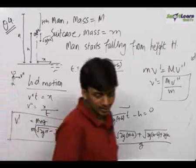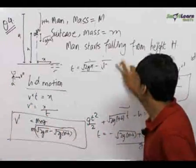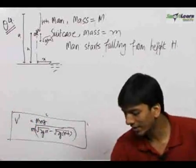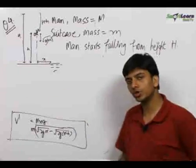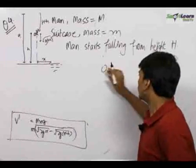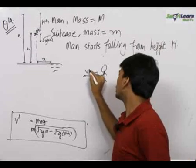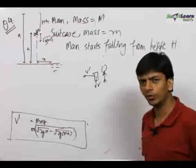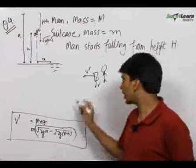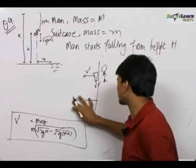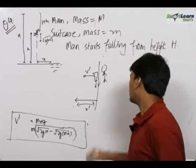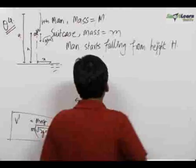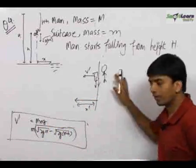The second part of the question is: where does the bag land? There are two ways of solving this. One way is quite easy — I will tell you the difficult way first, which most people will use. They know the horizontal velocity v' of the bag, they know the vertical direction velocity of the bag, they will find out the time taken for it to fall and then multiply that time by v' to get the displacement where it lands. But this method is very lengthy. The better way is to use the concept of centre of mass.